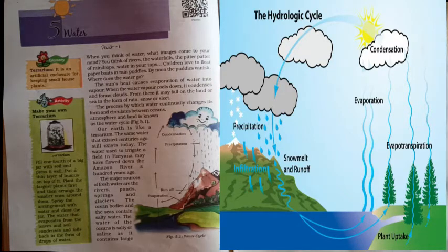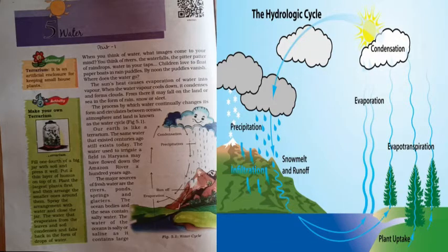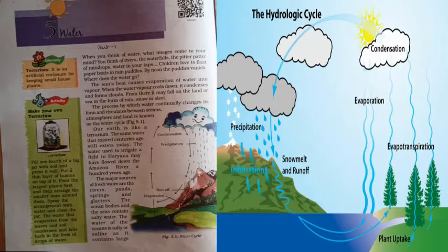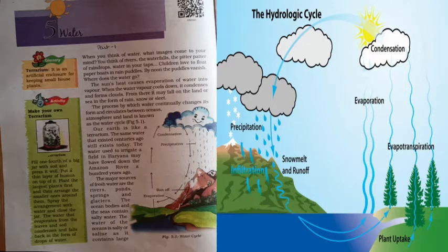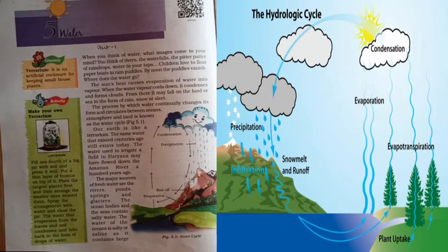Figure 5.1 shows the water cycle process. This is the process by which water continuously changes its form and circulates between oceans, atmosphere, and land. The processes taking place in this cyclic movement of water are evaporation, condensation, and precipitation.